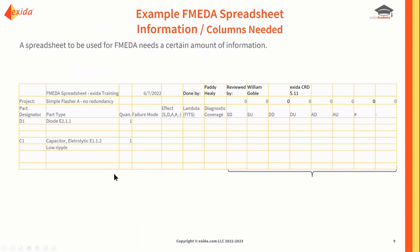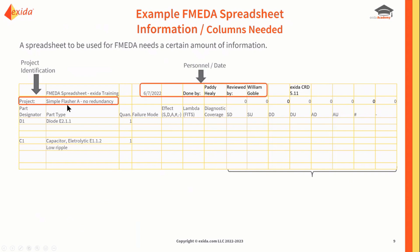A spreadsheet, much like the one we created when we started this back in the late 80s, has to have a certain amount of information. Project information is necessary, like the name of the project, the date you're working on it, who's doing the analysis and who's doing the review, and of course the component database version that is used.